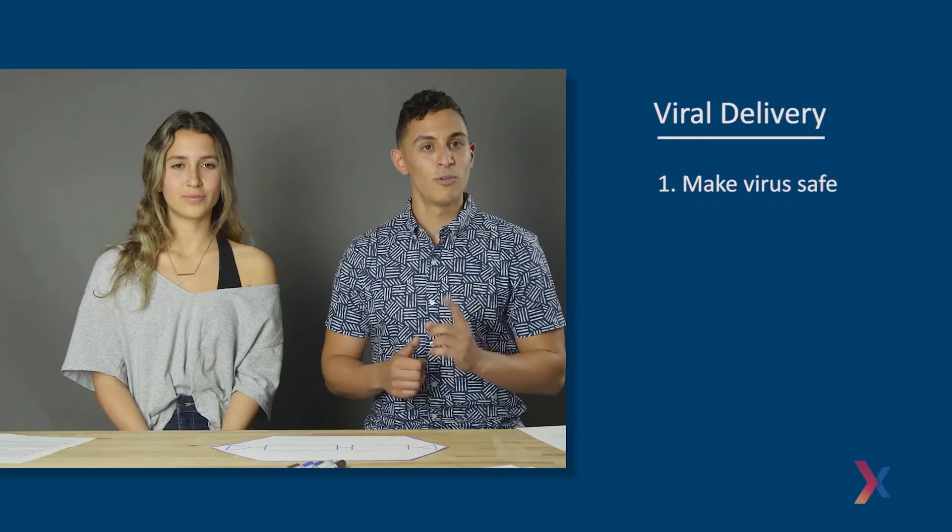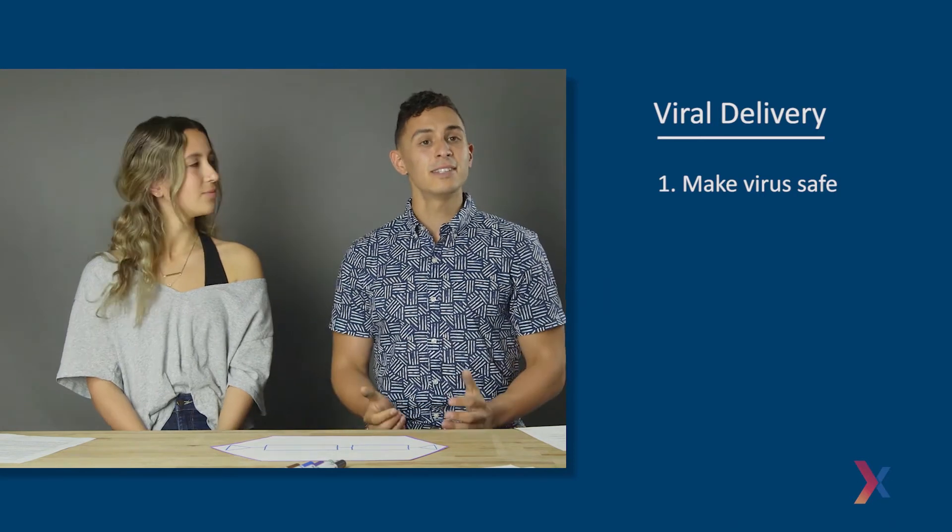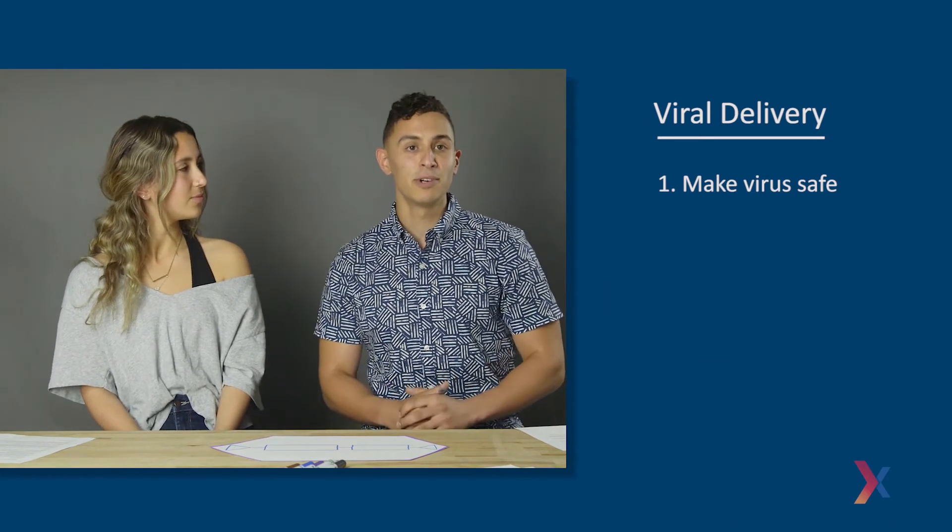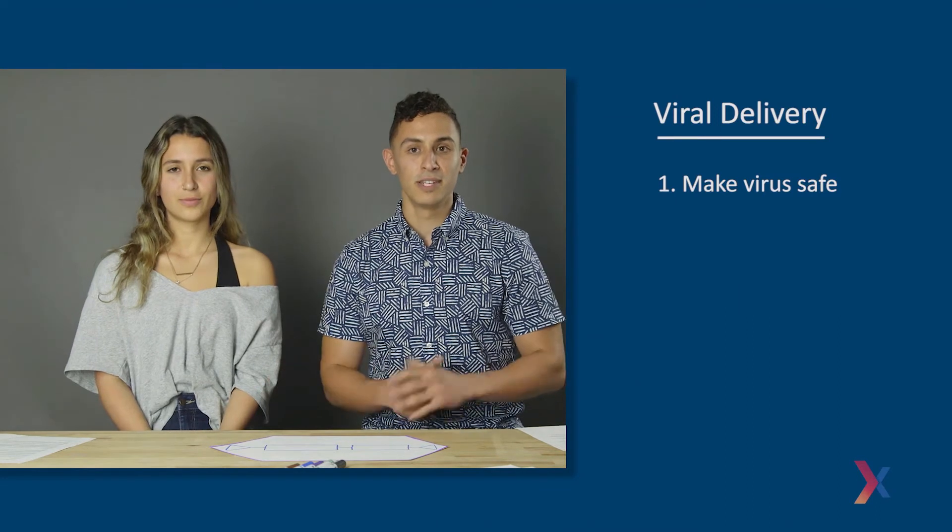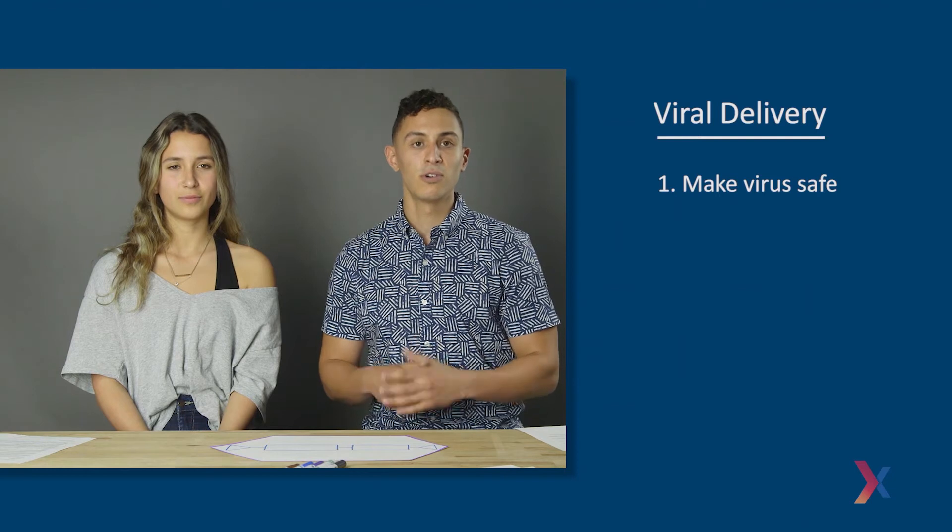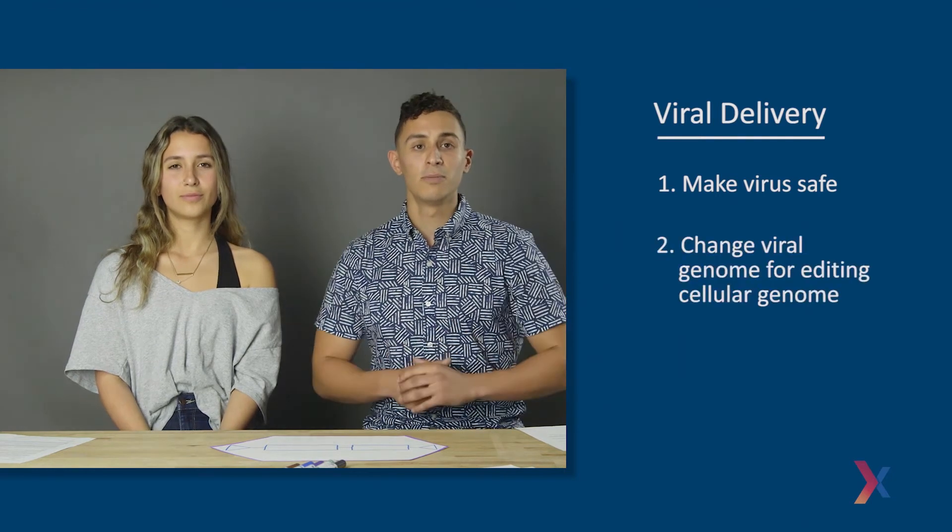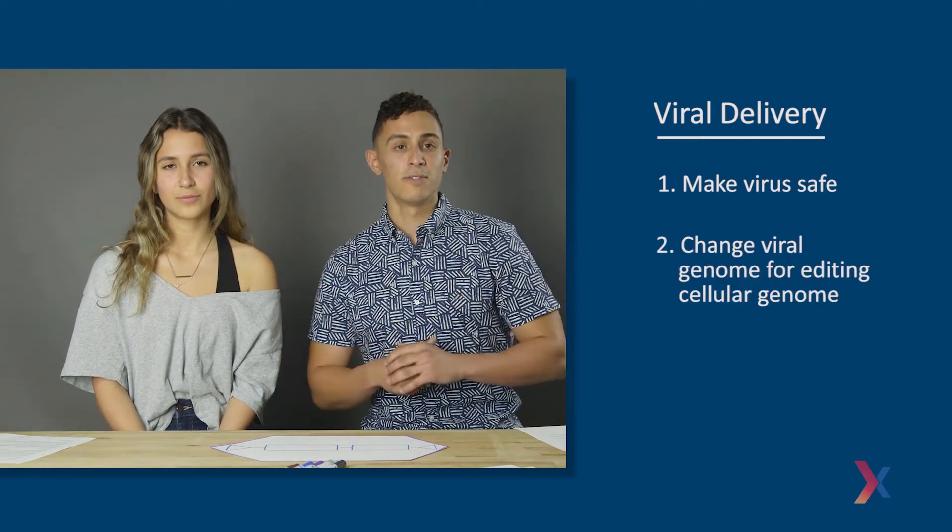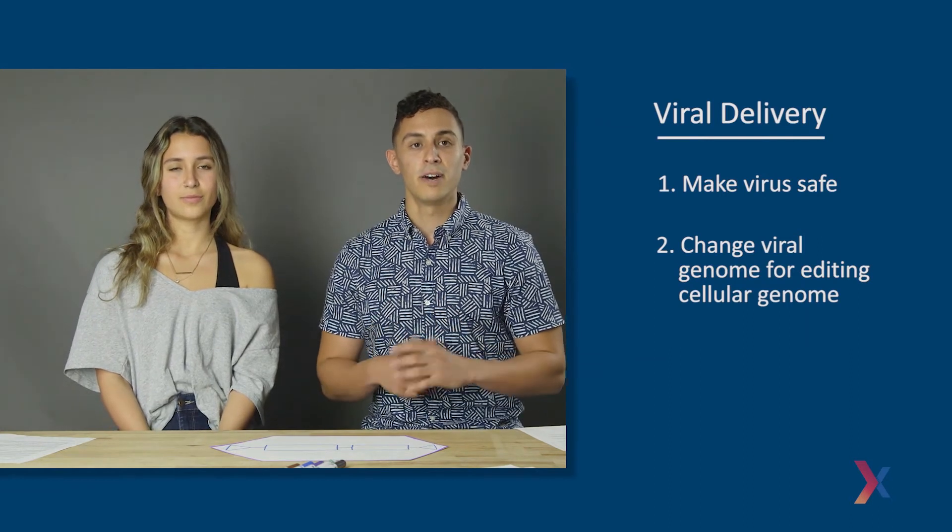For a researcher to use viruses as a tool, however, we have figured out two main things. One, how to make the virus safe. This is done by separating the most important components of the virus into separate units such that the virus can no longer replicate by itself in cell culture or in an animal. And two, researchers have figured out how to alter the viral genome in order to modify it with a specific gene of interest. Using a viral-based method enables the delivery of genes into cell types that can be very difficult to modify by physical or chemical methods.